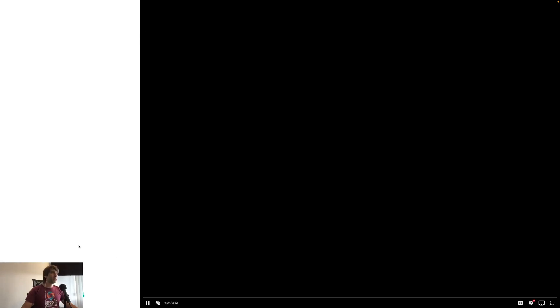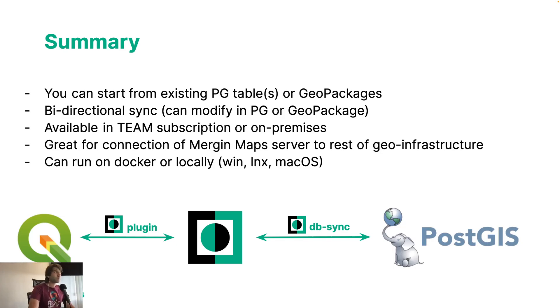To summarize what happened: we were able to modify a project in QGIS, push the data to the server, and DB Sync automatically picked up the new data and passed it to PostGIS. It works both ways — you can start from an existing Postgres database or GeoPackage. It handles concurrent commits and is available with a team subscription on the cloud. It's great for connecting your Merging Maps workspace to the rest of your GIS infrastructure, and can be run on your existing clusters or locally on your own servers.